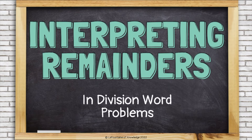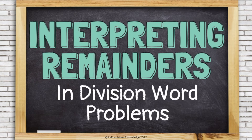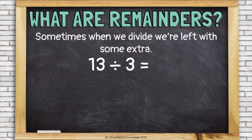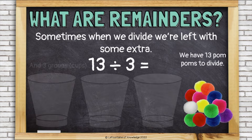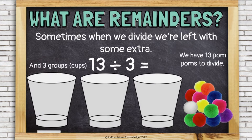Interpreting remainders in division word problems. Sometimes when we divide, we're left with some extra. Let's look at 13 divided by 3. We have 13 pom-poms to divide, and 3 groups or cups that we're going to divide them into. Let's divide up our 13 pom-poms evenly into these cups.